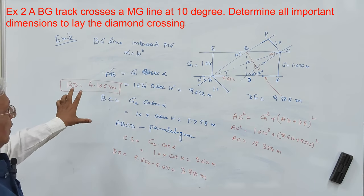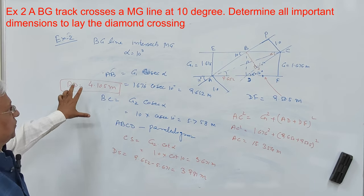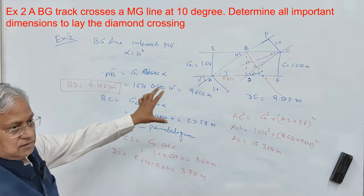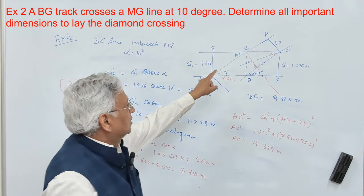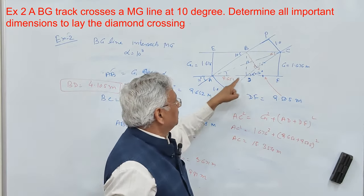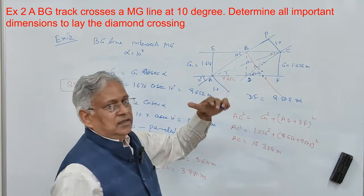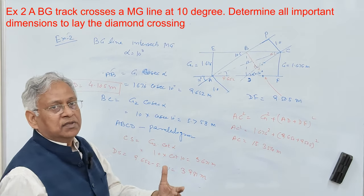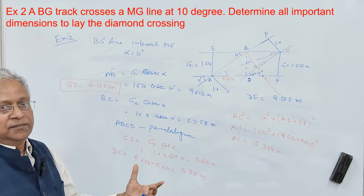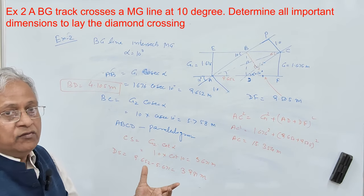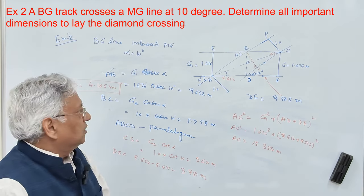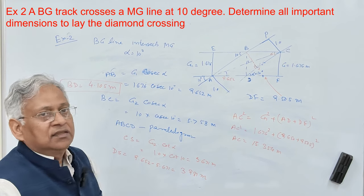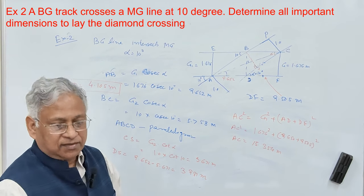Now you know all dimensions — the sides and the diagonals of this parallelogram — and you can lay it in the field. That is how a diamond crossing is designed. Thank you very much for watching this video. You can give your suggestions in the comment box.